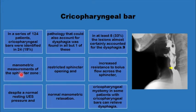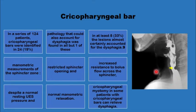When manometry was used to investigate the significance of the cricopharyngeal bar, it was found that resting tone and relaxation of the muscle are normal. What is abnormal is restricted sphincter opening and increased resistance to the flow of the bolus across the sphincter. Despite this, some authorities have tried myotomy as a treatment for the cricopharyngeal bar and report good results.